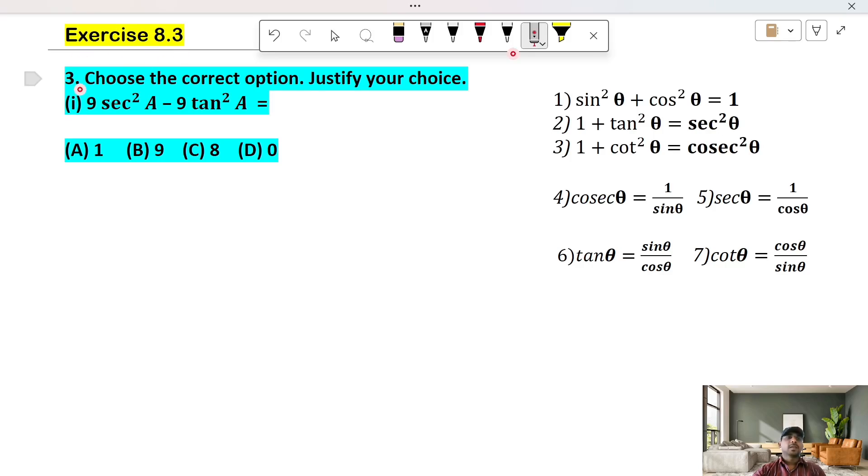Exercise 8.3. Choose the correct option. Justify your choice. This is a multiple-choice question. This is 4 options. This is correct.